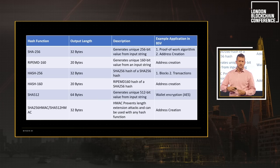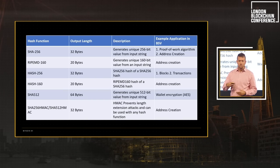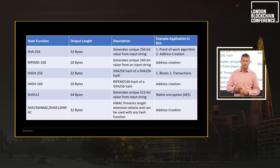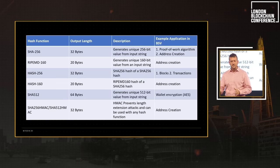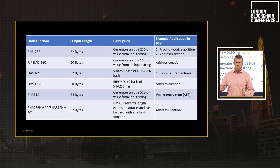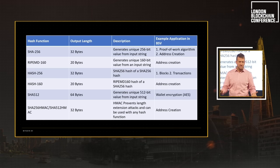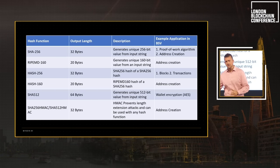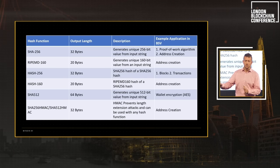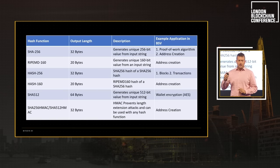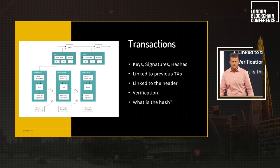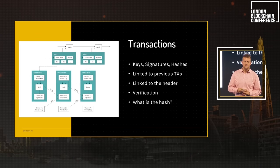Here's a table showing where hash functions are used in Bitcoin. SHA-256 is in the proof-of-work algorithm, address creation, and generating transaction identifiers. RIPEMD-160, with its 160-bit output, is used in address creation. Hash256 is the opcode name for a double application of SHA-256. And SHA-512 is used for wallet encryption.